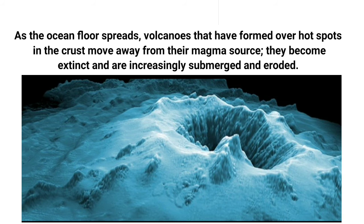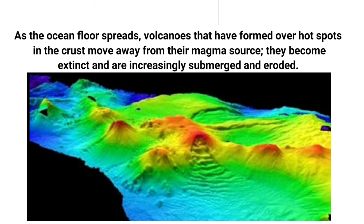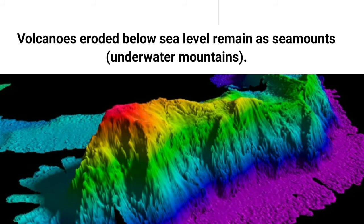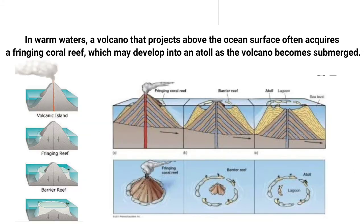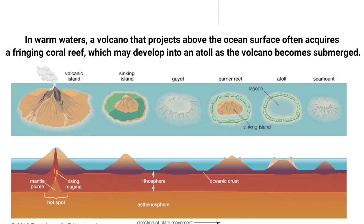As volcanoes move away from their magma source, they become extinct, are increasingly submerged and eroded. Volcanoes eroded below sea level remain as sea mounts. In warm water, a volcano that projects above the ocean surface often acquires a fringing coral reef, which may develop into an atoll as the volcano becomes submerged.